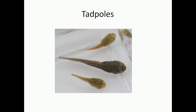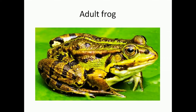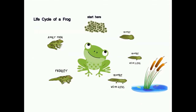The tadpoles gradually lose their tail and develop hands and legs, and then they become adult frogs. This change of form during the life cycle of an animal — where the young one is completely different from the adult — is called metamorphosis.